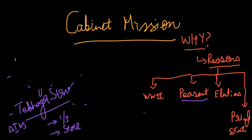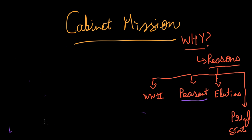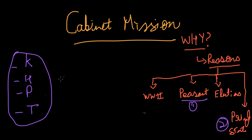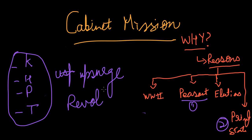Regarding the princely states and their contribution to the coming of the Cabinet Mission: some examples of princely states are Kashmir, Hyderabad, Patiala, and Travancore. These places were engulfed by popular upsurges and revolts — people were angry against their kings and wanted freedom. This unrest also contributed to the British deciding to negotiate the transfer of power.